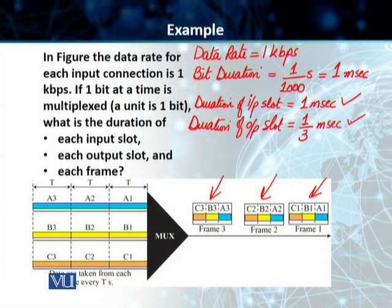And students, lastly, we know that each frame carries 3 output time slots: A1, B1, C1 in the first one, A2, B2, C2 in the second frame, and similarly we have got A3, B3, and C3 in frame number 3. So each frame is carrying 3 output time slots, so the duration of the frame in this case is going to be 3 multiplied by the duration of each output time slot, 1 by 3 milliseconds, and this is equal to 1 millisecond.